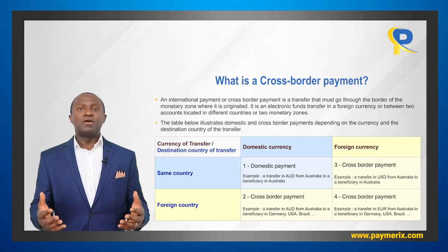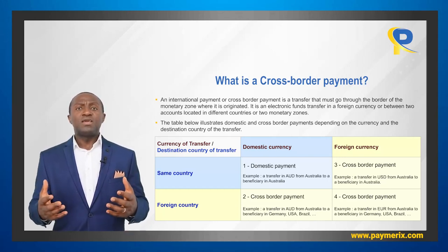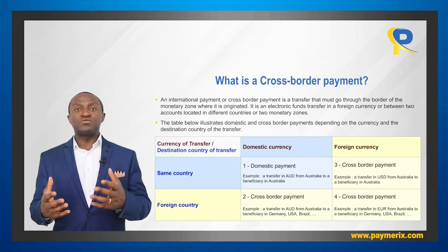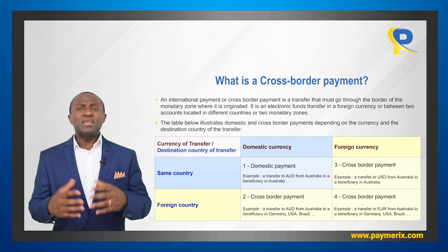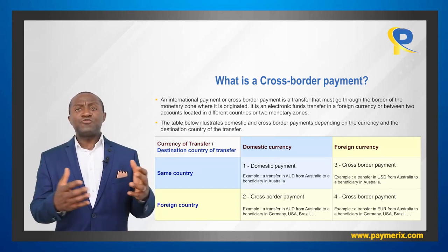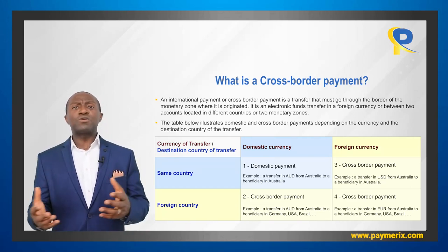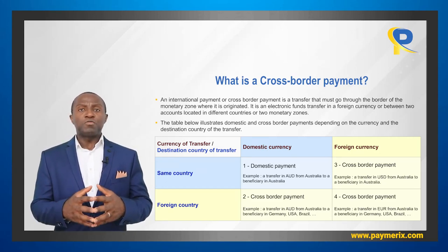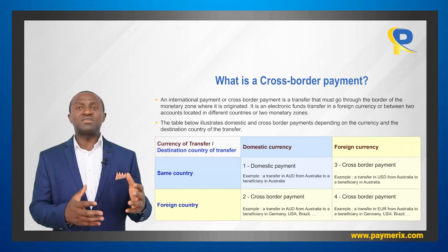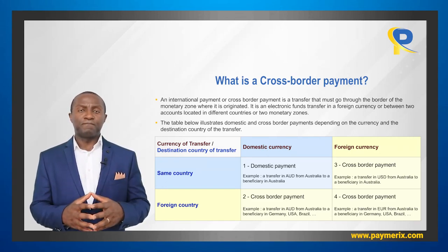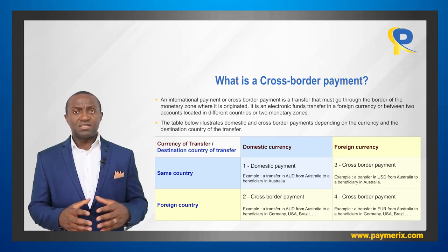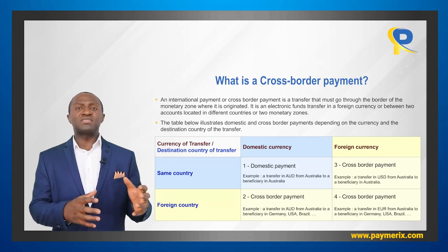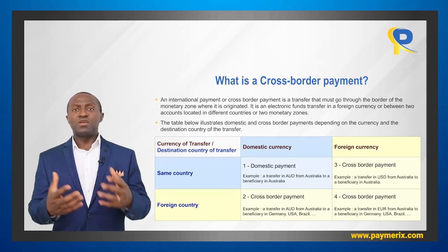Simply put, an international payment or cross-border payment is a transfer that must go through the border of the monetary zone where it is originated. It is an electronic fund transfer in a foreign currency or between two accounts located in different countries. Here both destination and currency of the payment play an important role. The table you see here illustrates domestic and cross-border payments depending on the currency and the destination country of the transfer.